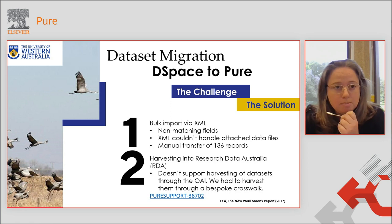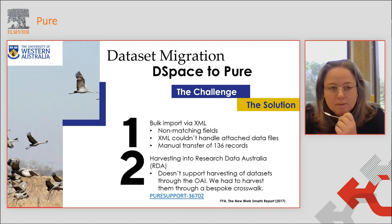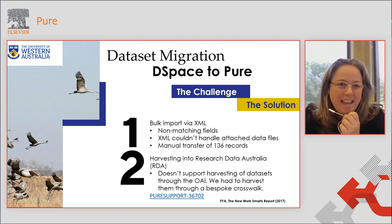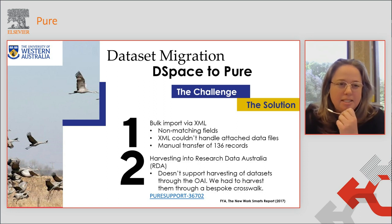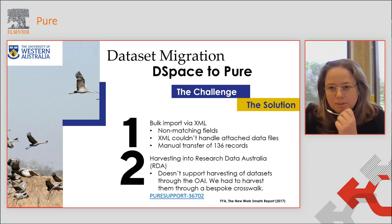With our migration from DSpace to Pure, we did have some bulk uploading at the time via XML. There were non-matching fields and the XML couldn't handle the attached dataset files. Because we only had 136 records, we ended up doing this manually and minting DOIs for them. We also had to create a crosswalk to map over to Research Data Australia.